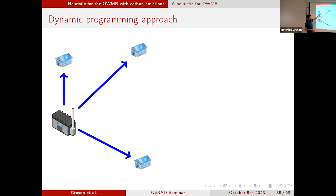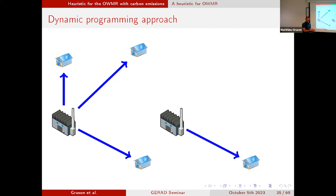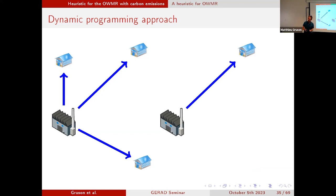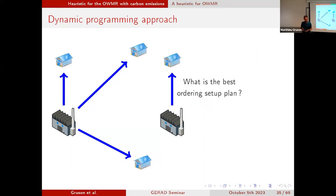The second approach was dynamic programming. The idea is to go from the one warehouse multi-retailer setting to a set of two-level lot sizing problems. I consider just one warehouse-retailer pair and ask: what is the best retailer replenishment plan for this specific retailer? From the literature, we have a dynamic programming approach to solve this kind of problem. It gives me the setup decisions for this retailer. Then I go to the next retailer, ask the same question, apply dynamic programming, and go through all the different retailers to get the full set of decisions.